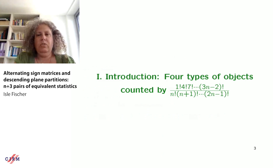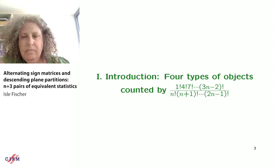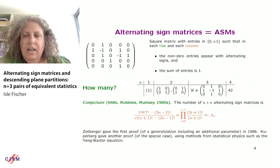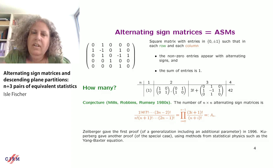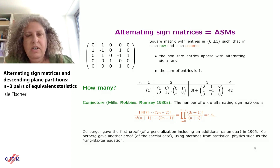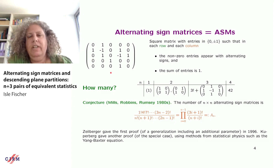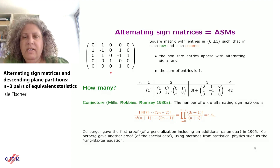I'll show four types of objects all counted by the same product formula. The first are alternating sign matrices: square matrices with entries zero, plus one, and minus one, such that in each row and column, the non-zero entries alternate in sign, and the sum of entries equals one in each row and column.